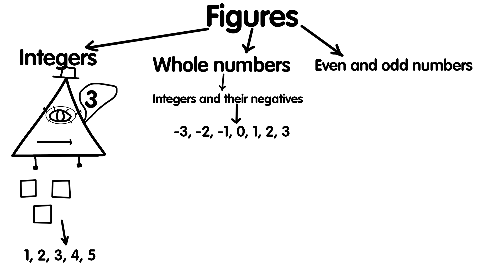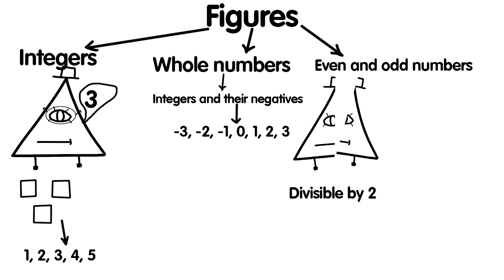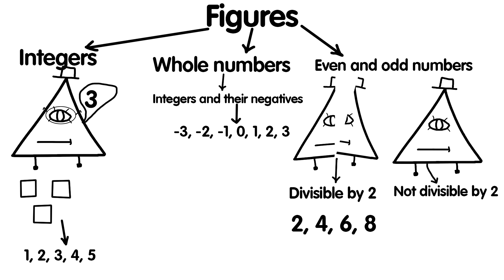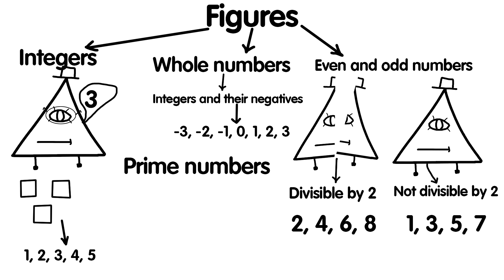Even and odd numbers. Even numbers divide by 2 without remainder, e.g., 2, 4, 6, 8. Odd numbers do not divide by 2 without remainder, e.g., 1, 3, 5, 7. Prime numbers are numbers that divide only by 1 and by themselves, e.g., 2, 3, 5, 7, 11.